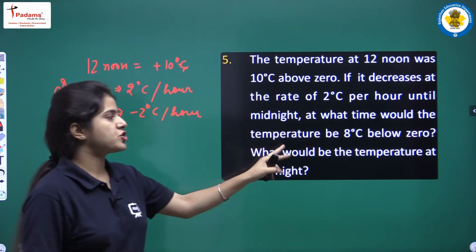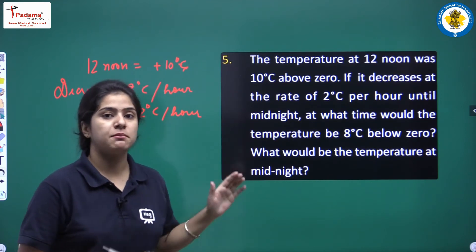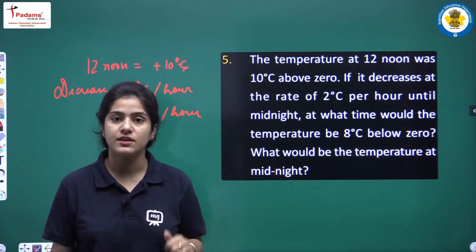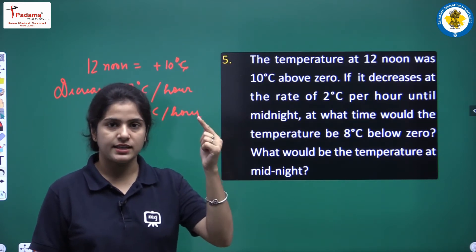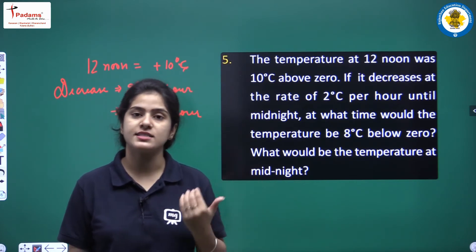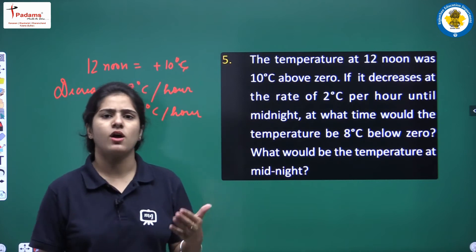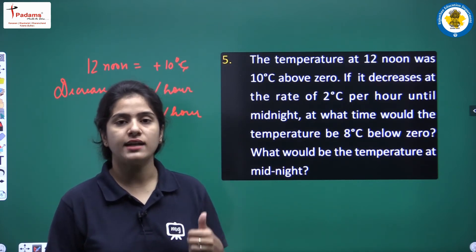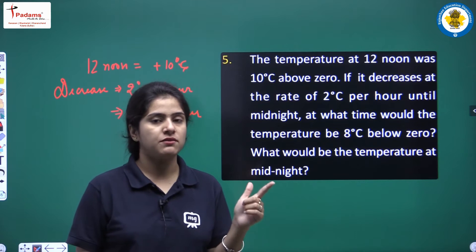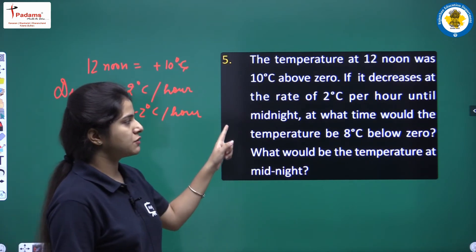We need to find: at what time would the temperature be 8 degrees Celsius below zero, i.e., minus 8 degrees Celsius? We also need to find the temperature at midnight. The gap between 12 noon and 12 midnight is 12 hours, so we have two parts to solve.